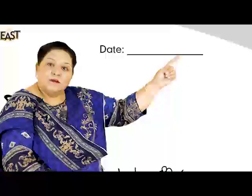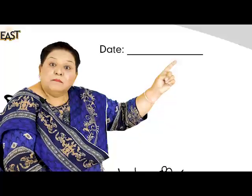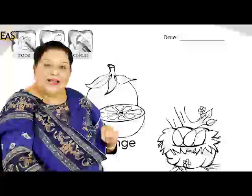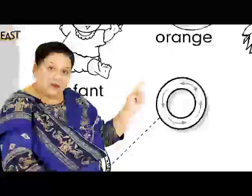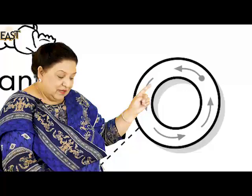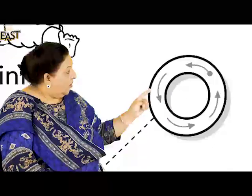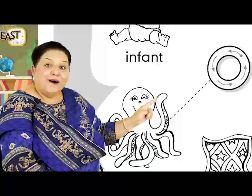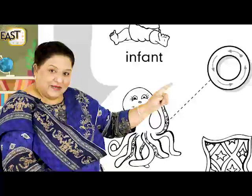And then the next one - we colour. So: trace, match, and then colour. Well done. And then what goes there? The date - mummy helps you with the date. Good. Now let's see these pictures. Do you remember this 'O'? Do you remember this 'O'?